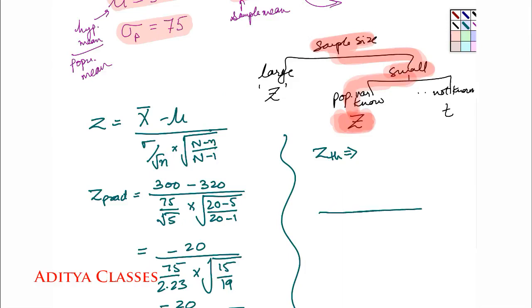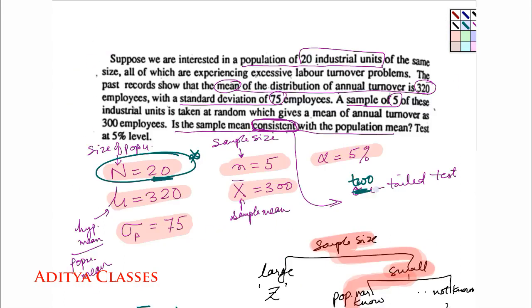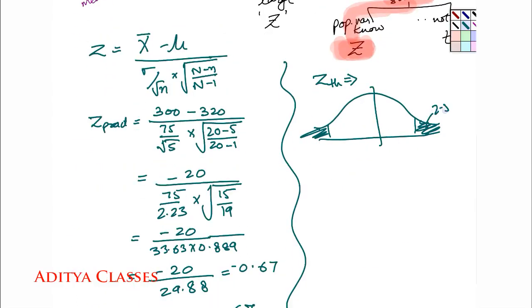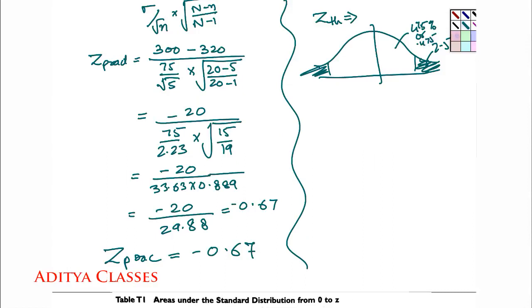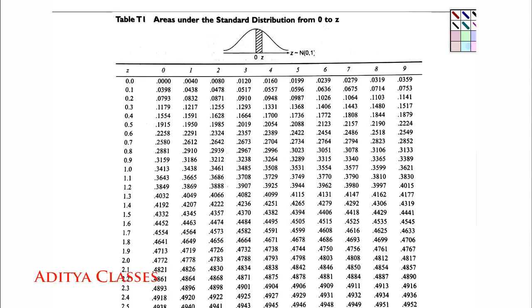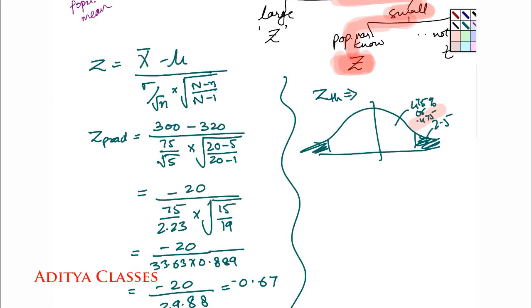So z theoretical will be 5% two tailed, leaving 2.5% in one tail, leaving this as 47.5% or 0.475. So let me check value of 0.475 in the table. We need to look for 0.475 area. For this 0.475, z score is 1.96. So I get my z theoretical as 1.96.